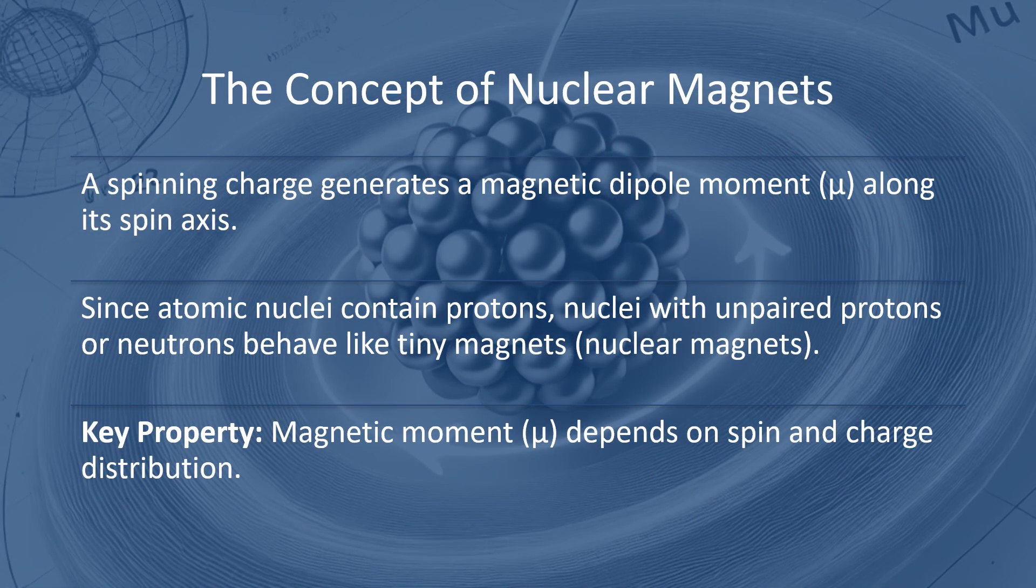Atoms are made of nuclei and electrons. Inside the nucleus, protons and neutrons behave like tiny magnets due to their spin, a fundamental quantum property. This spin creates a magnetic moment, which we call a nuclear magnet.